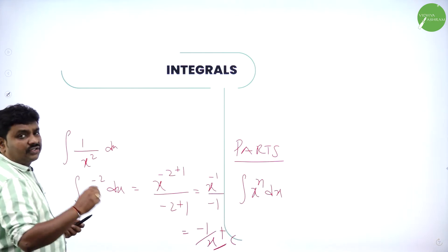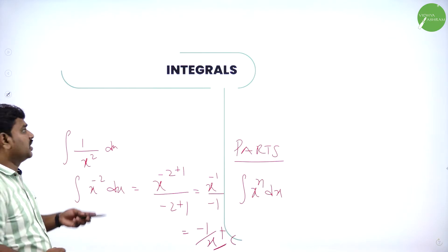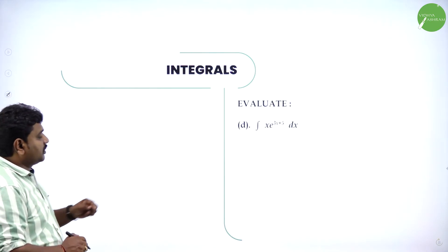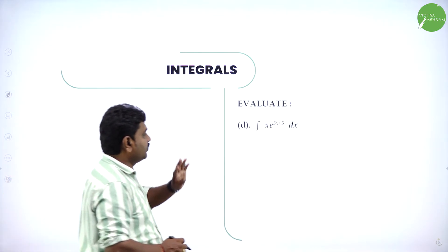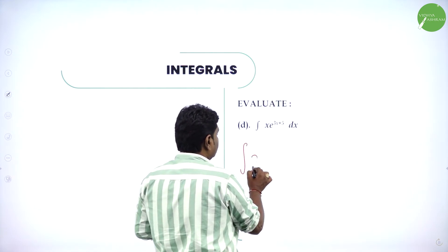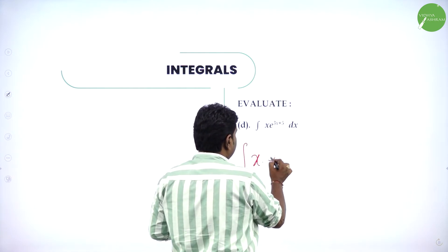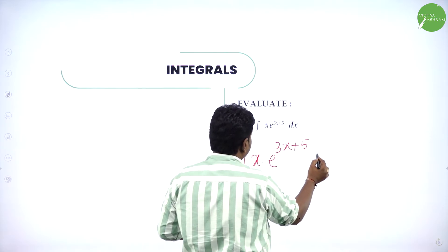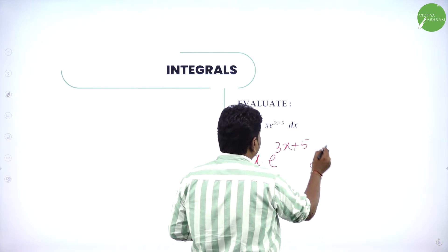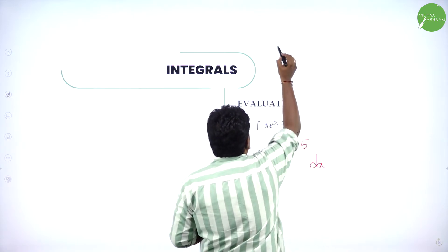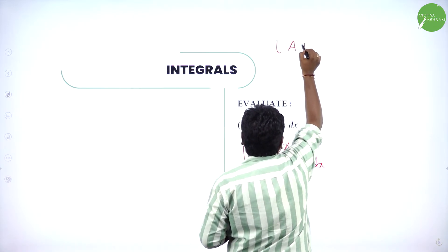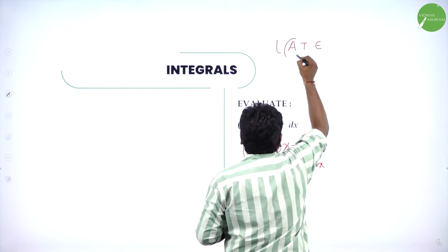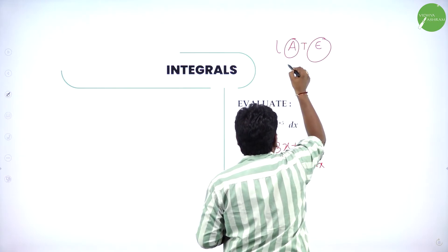Derivative of log(x), d/dx of log(x), is 1/x. Next: integration of x·e^(3x+5) dx. We can use parts. According to LATE, A is algebra and E is exponential — algebra first, exponential next. So this is already in the correct order.